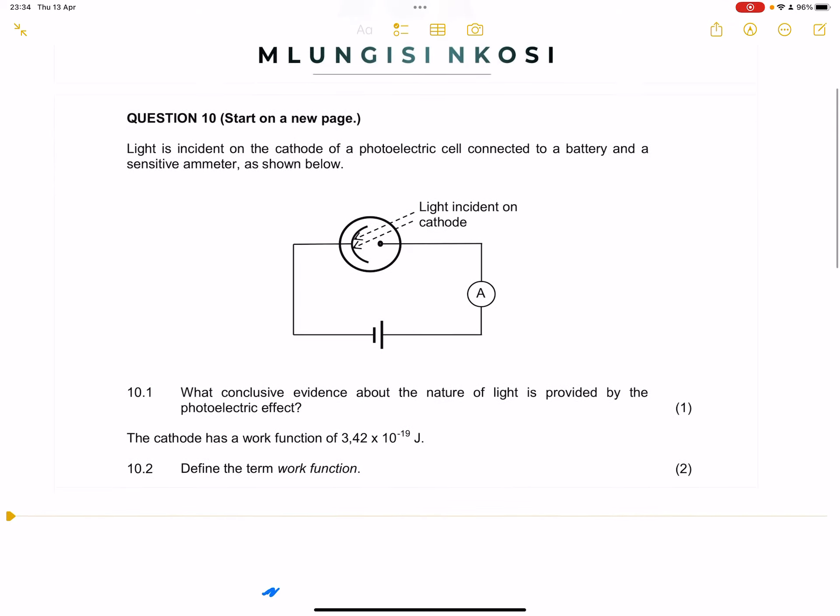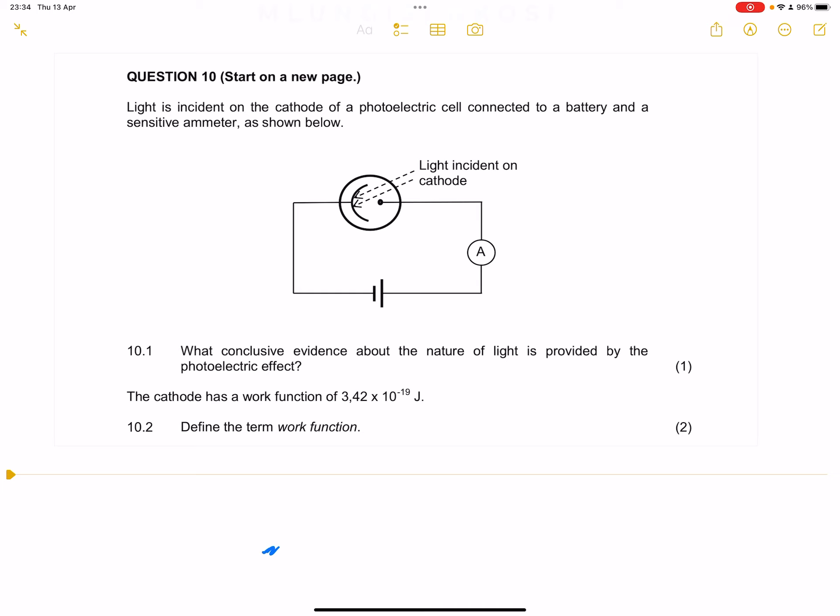So in this case we're looking at question 10. They say to us we've got light that is incident on the cathode of a photoelectric cell connected to a battery and a sensitive emitter as shown below. They say what conclusive evidence about the nature of light is provided by the photoelectric effect. Please remember that the photoelectric effect is evidence that light can behave as a particle. So it's the evidence of the particle nature of light. That is the conclusion that we can draw.